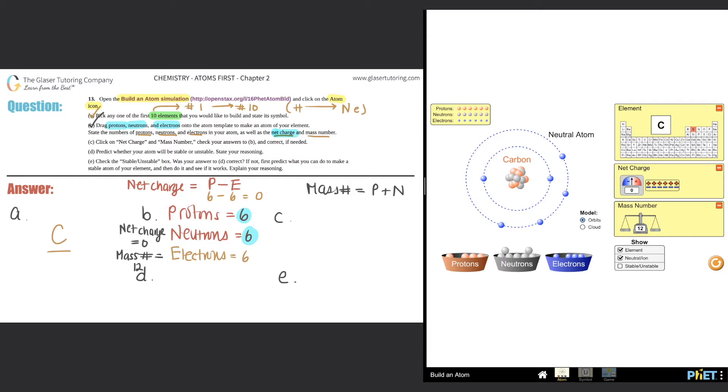Part c says click on the net charge and mass number to check your answers. We just did this. We clicked on the net charge, it showed us the real answer was 0, and we clicked on the mass number, which was 12. This one was good. State your answer whether you were correct or incorrect—we were correct. Next, predict whether your atom will be stable or unstable. We have to predict, so this could be right or wrong. I'm going to say that this is stable.